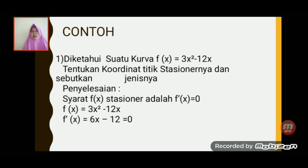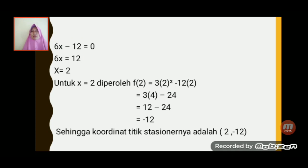Untuk contoh yang pertama, diketahui suatu kurva f(x) sama dengan 3x² dikurangi 12x. Tentukan koordinat titik stasionernya dan sebutkan jenisnya. Untuk penyelesaian, syarat stasioner adalah turunan pertamanya sama dengan 0. Berarti f'(x) sama dengan 6x min 12, di sini harus sama dengan 0. Berarti 6x min 12 sama dengan 0, maka 6x sama dengan 12.